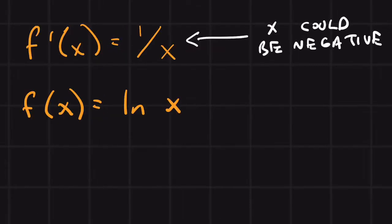We need to be careful though. Inside of f'(x), that x in the denominator could be negative. Inside of our natural log, that x is not allowed to be negative. You cannot take the natural log of a negative number. So to account for this, we need to put an absolute value around the x inside the natural log.